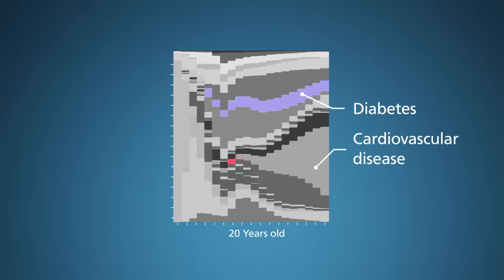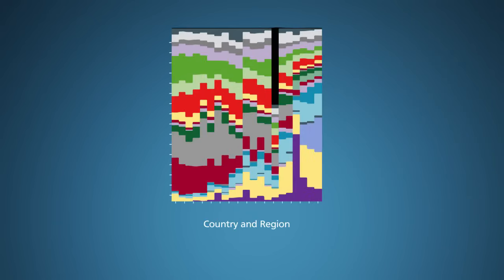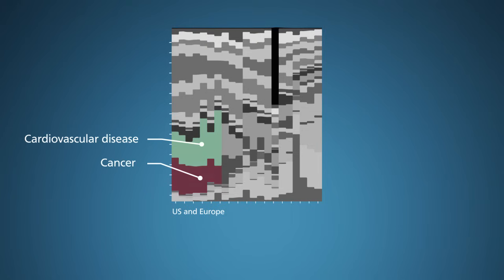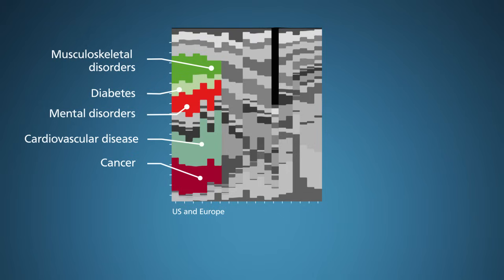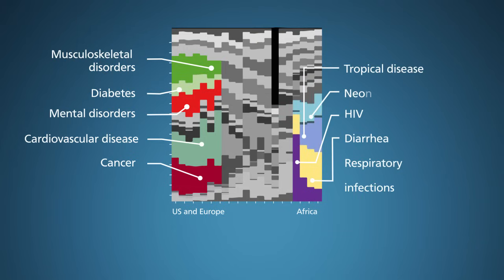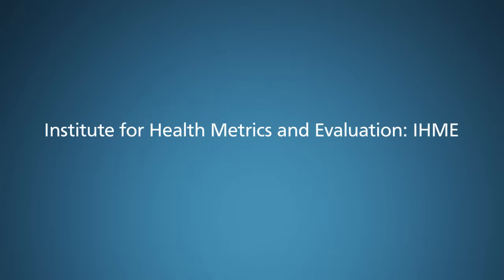Cardiovascular disease takes off quickly from age 30. Similarly, in this graph, you can see how disease burden varies by geographic region. On the left are wealthier countries, with the largest burden from cardiovascular disease and cancer, and secondarily from musculoskeletal disorders, diabetes, and mental disorders. On the far right are African regions, with the highest burden from HIV, diarrhea, and respiratory infection, tropical diseases, and neonatal disorders. You can find even more DALY-based graphics in a special December 2012 issue of Lancet, and online at the Institute for Health Metrics and Evaluation website.